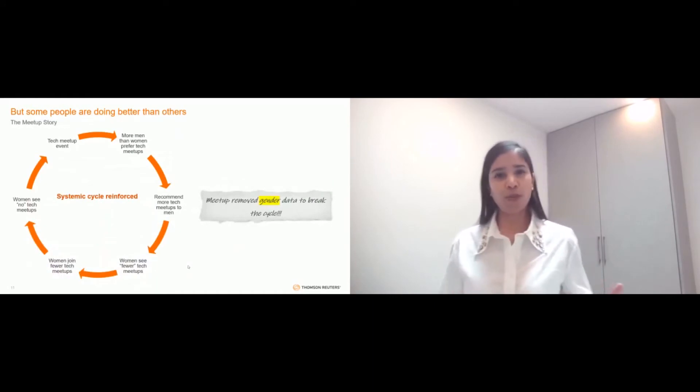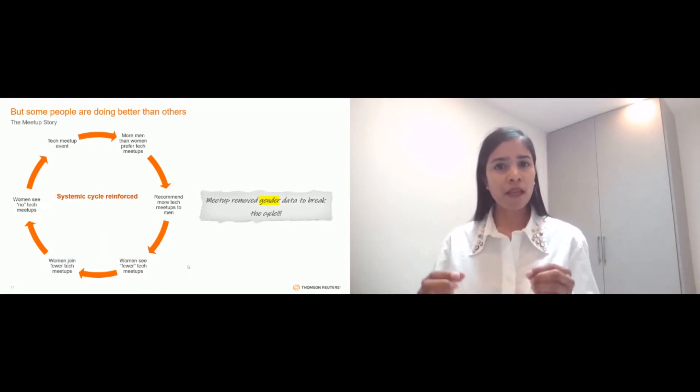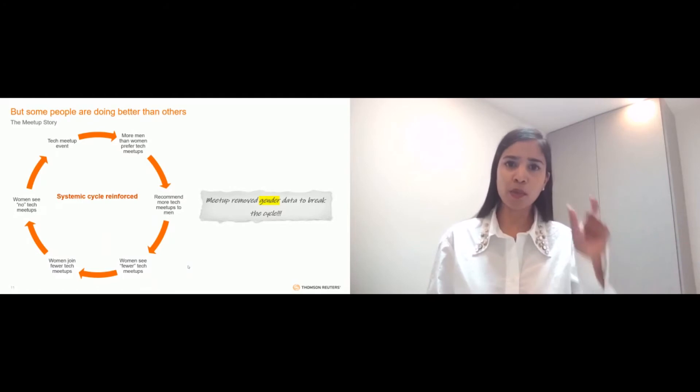But this story is not all bad news. It's not all doom and gloom. There are shining examples out there that we can point to and we can learn from. Like Evan Estola, the lead machine learning engineer at Meetup, who discovered that men were showing more interest in attending tech meetups than women. So he realized that by taking gender into account in Meetup's recommendation algorithm, this would result in the recommendation algorithm recommending fewer tech meetups to women, which would mean that women were seeing and responding to and attending fewer tech meetups, which would reinforce the cycle.